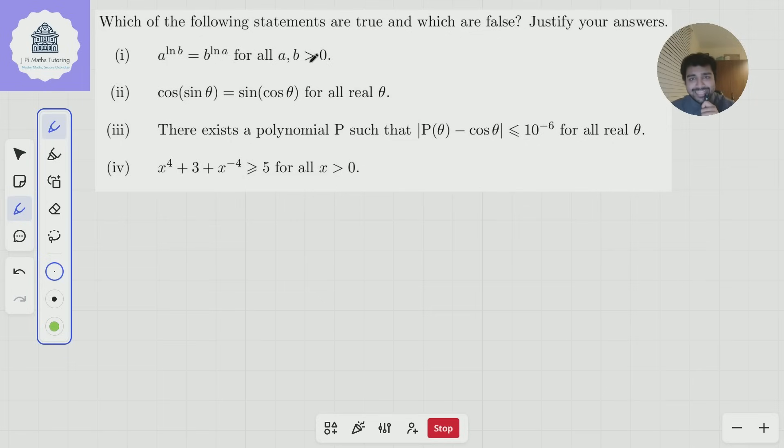a^(ln b) = b^(ln a). Is that true for all positive a and b? Well, that statement is true if and only if I can take logarithms on both sides and the equation remains true. So, ln(a^(ln b)) = ln(b^(ln a)).